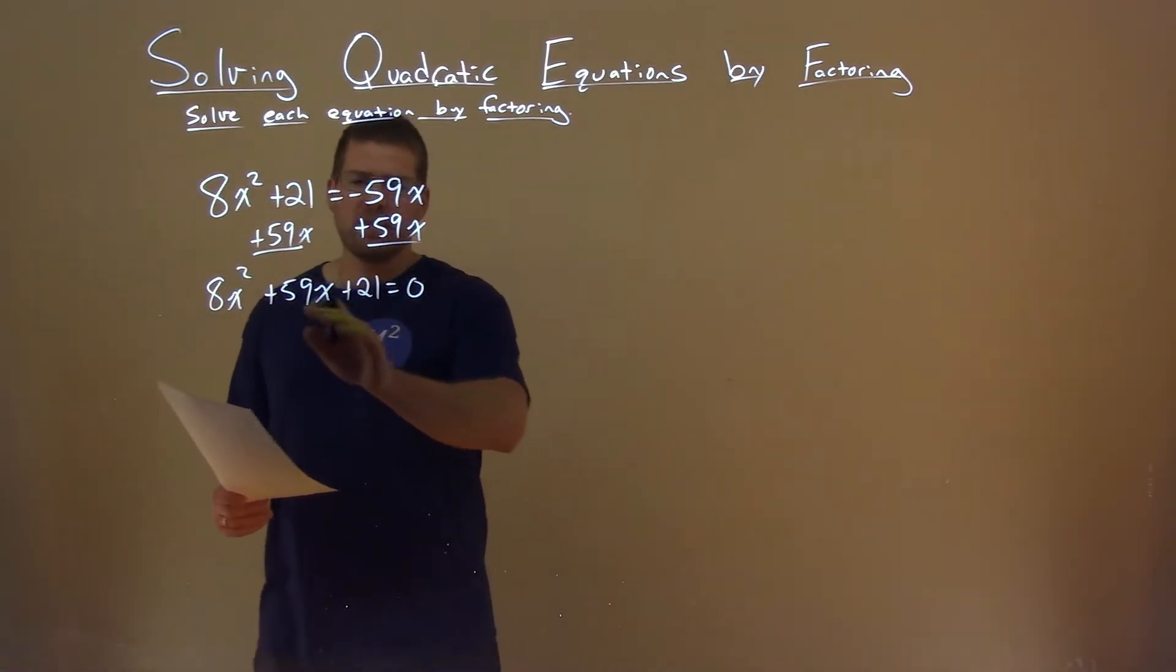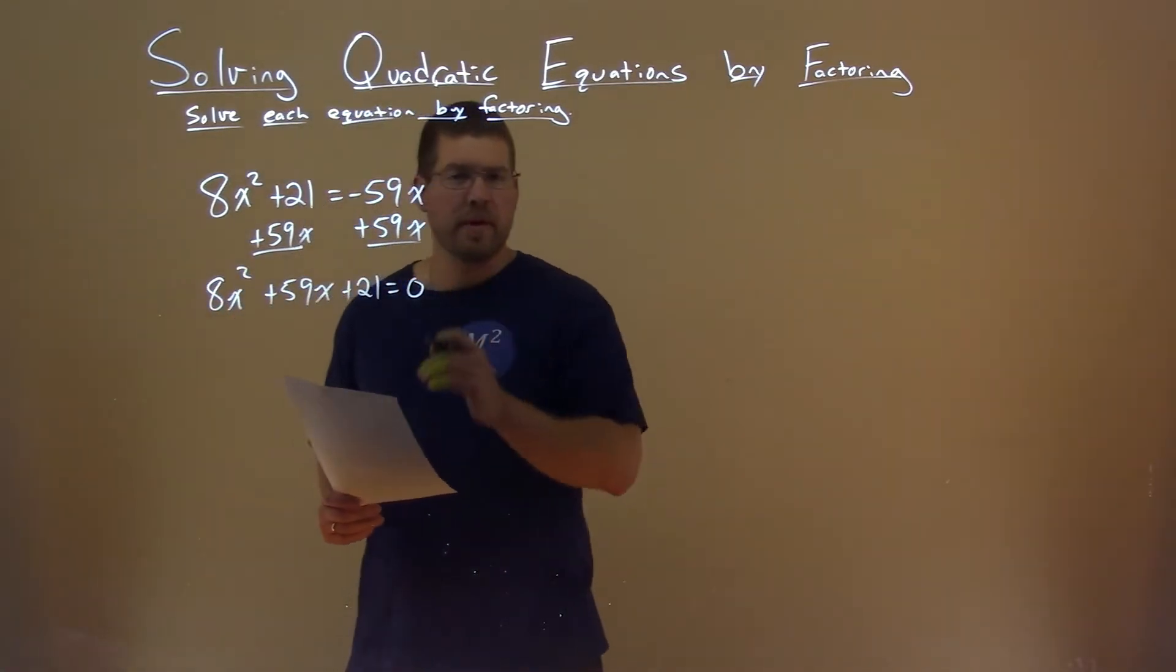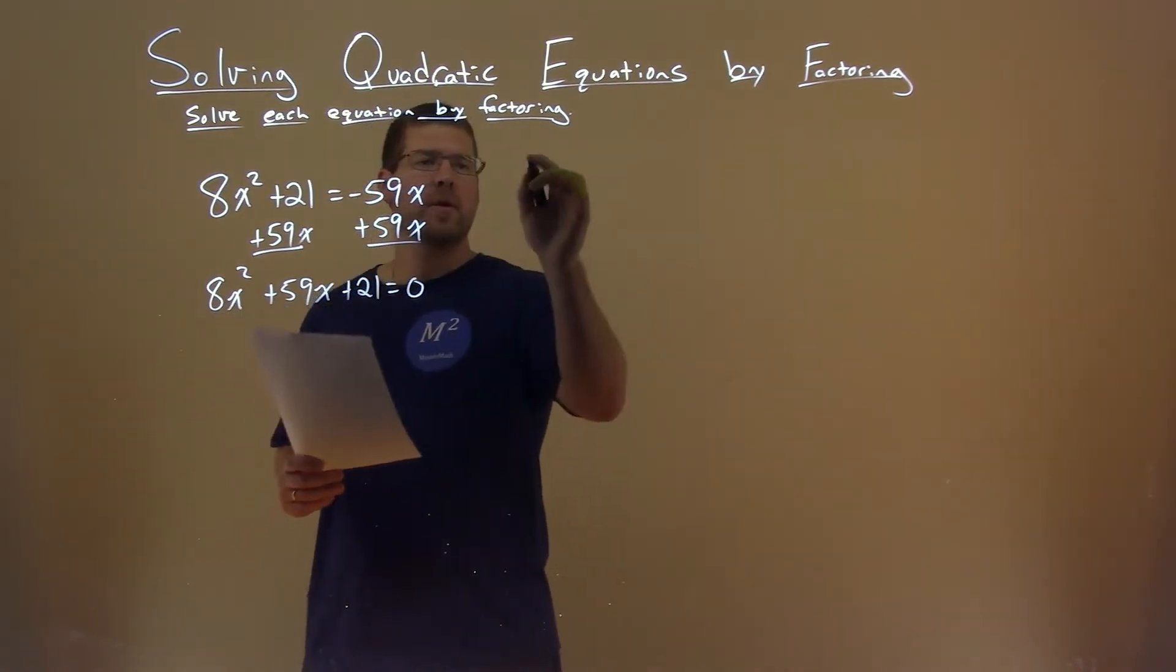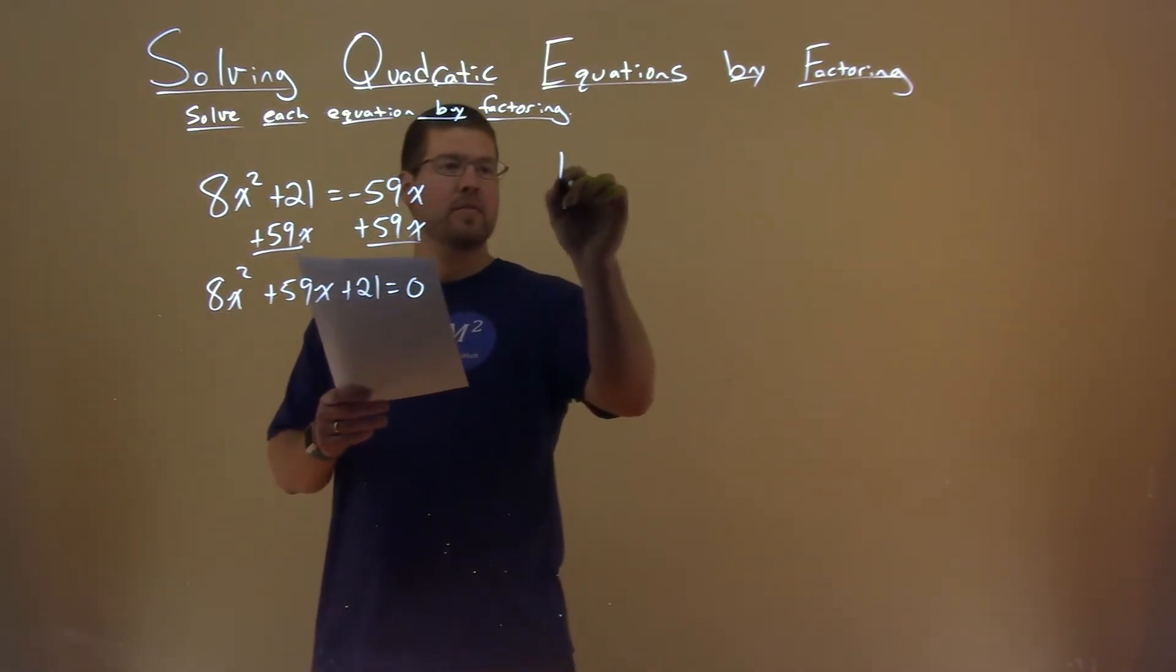This doesn't seem like it factors easily, so what am I going to do? I'm going to do this by grouping. 8 times 21, 8 times 21 is a positive 168.